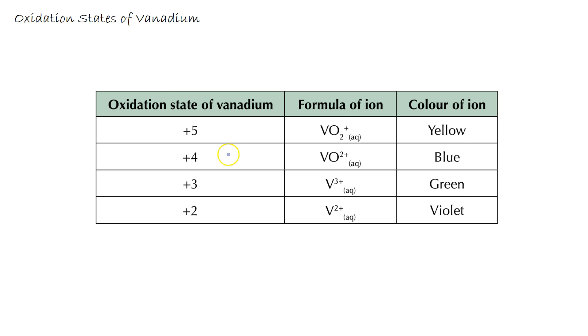If we look at vanadium VO2 plus, we've got one oxygen so minus two from the oxygen and plus four from the vanadium, giving us an overall charge of two plus. For V3+ there's no oxygen present so the oxidation state is simply the charge on the vanadium. And again for V2+ the oxidation state is the same as the charge on the ion. Just remember that for charge we have the number first, whereas the oxidation state we have the sign before the number.